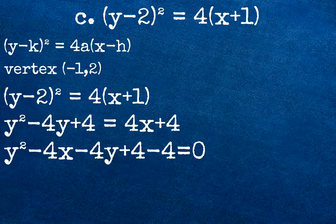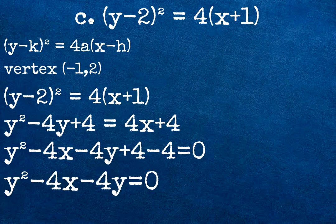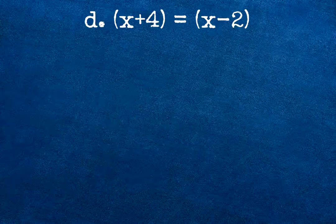Then simplify the answers. Our answer is y squared minus 4x minus 4y equals 0.